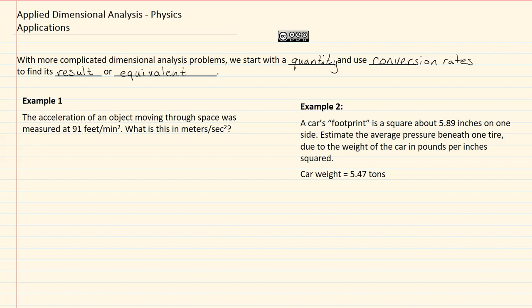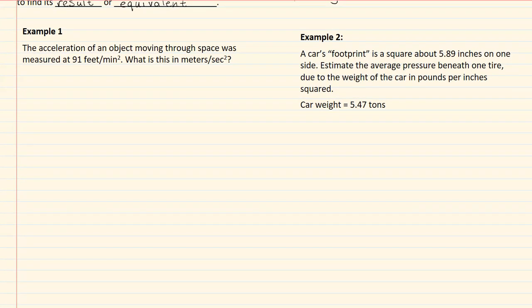Let's look at example one. In example one, we have the acceleration of an object moving through space was measured at 91 feet per minute squared. What is this in meters per second squared?